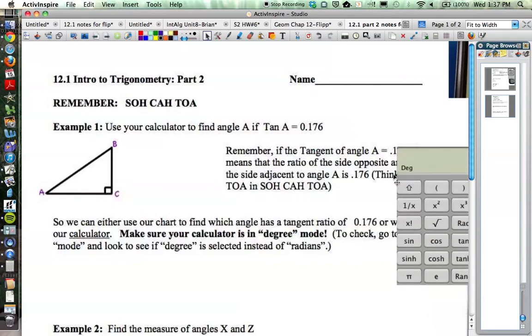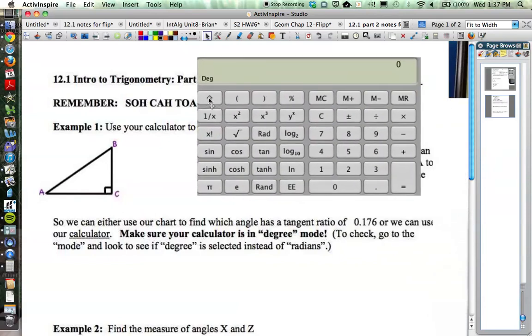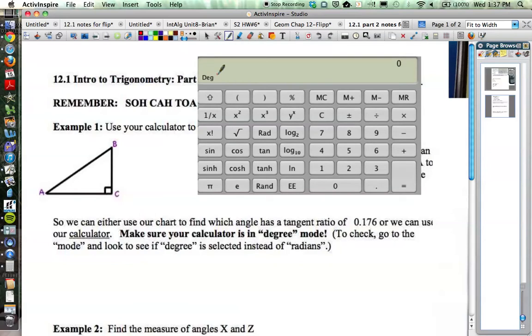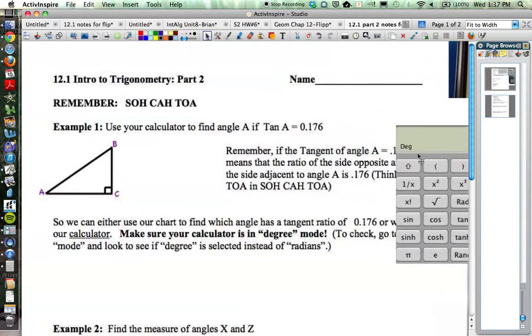If you have one of the scientific calculators, usually it's going to already be in degree mode. Most of the time those are defaulting to degree mode. But if I press this button right here, that will switch it to radians, which I don't want. Some of the calculators might have a little D circled up on the screen here, which probably means it's in degree mode.